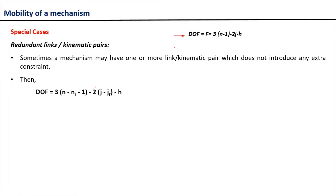Now if Nr is the number of redundant links in the mechanism and Jr is the number of redundant kinematic pairs, then the Kutzbach criteria gets modified and the new degree of freedom for the mechanism can be calculated by 3(N minus Nr minus 1) minus 2(J minus Jr) minus H. Let us take an example of a mechanism and try to understand what is meant by a redundant link or a redundant kinematic pair.